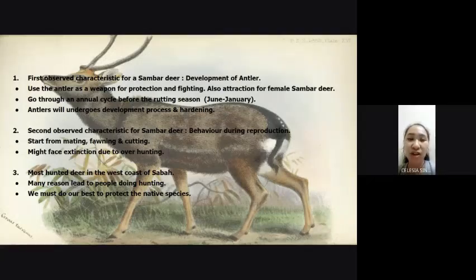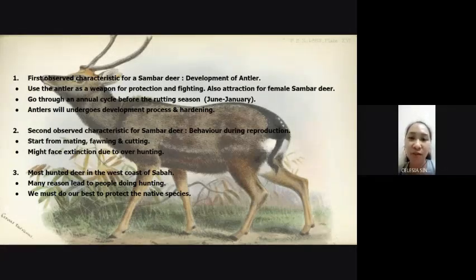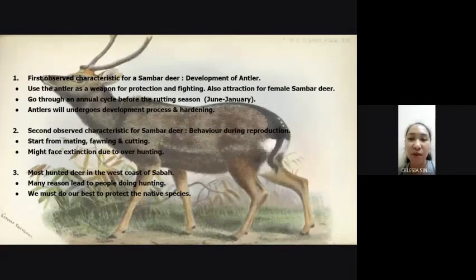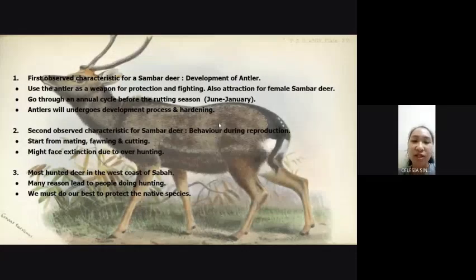The antler of sambar deer will develop into a tree-branch structure and requires 36 days for hardening. The second observed characteristic of sambar deer is behavior during reproduction. When sambar deer reproductive patterns start, including toning and rutting, they will show sound, scrape behavior, and breeding behavior.